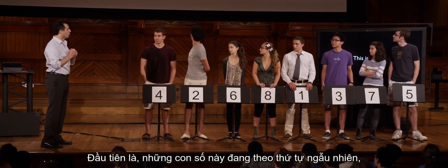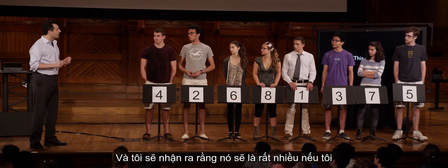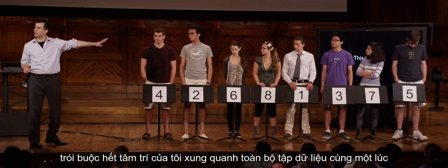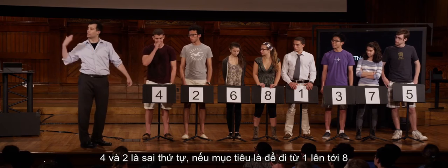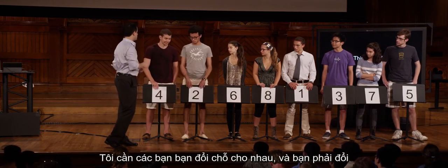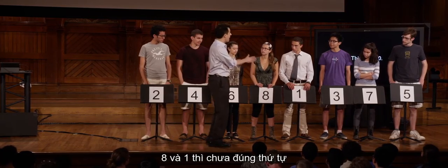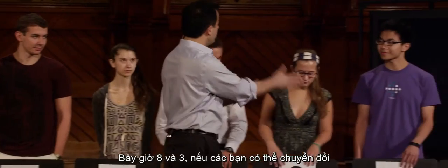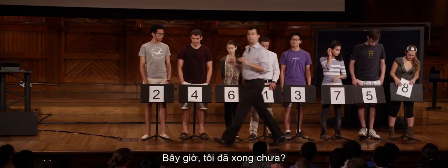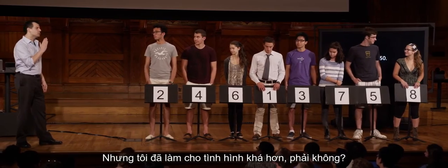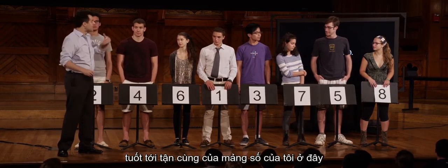First algorithm: bubble sort. Starting naively, 4 and 2 are out of order — swap. 4 and 6 are fine. 6 and 8 fine. 8 and 1 — swap. 8 and 3 — swap. 8 and 7 — swap. 8 and 5 — swap. The 8 has bubbled all the way to the end. The situation is better but not done — we repeat the process.